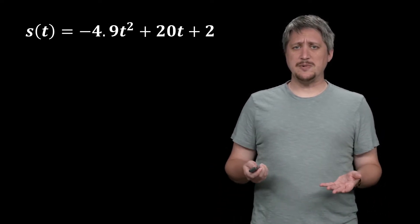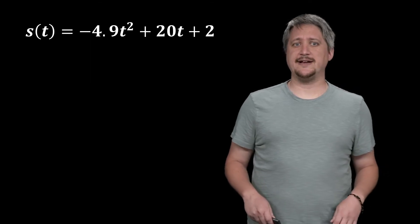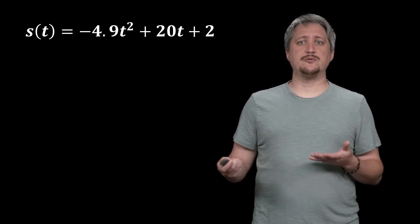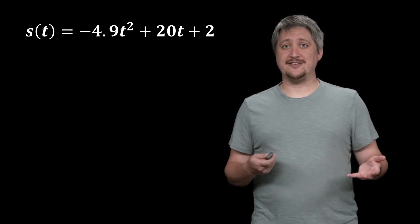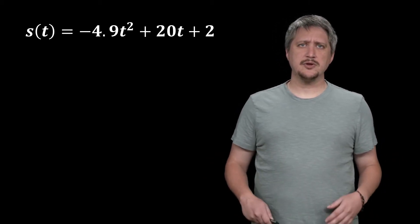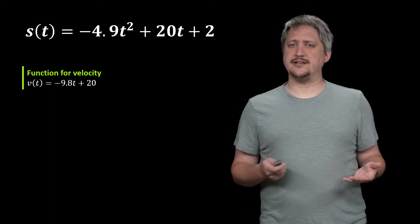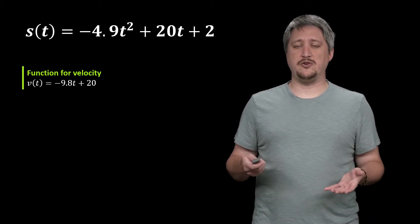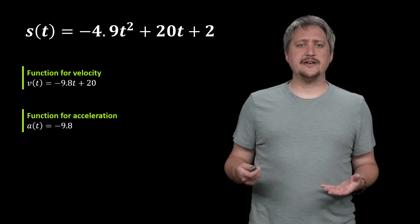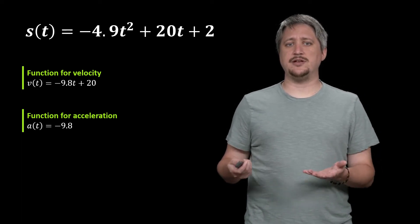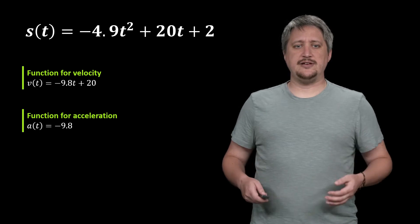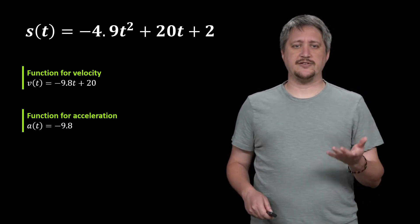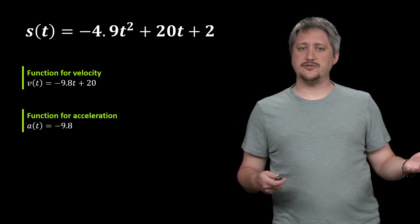Remembering from our Newtonian mechanics section, we can start with an equation that gives us the position, this s of t position at time t. We can take the derivative that gets us v of t, our function for velocity, and we could take another derivative to get a of t, our function for acceleration. So here our a of t is negative 9.8, velocity was negative 9.8t plus 20.